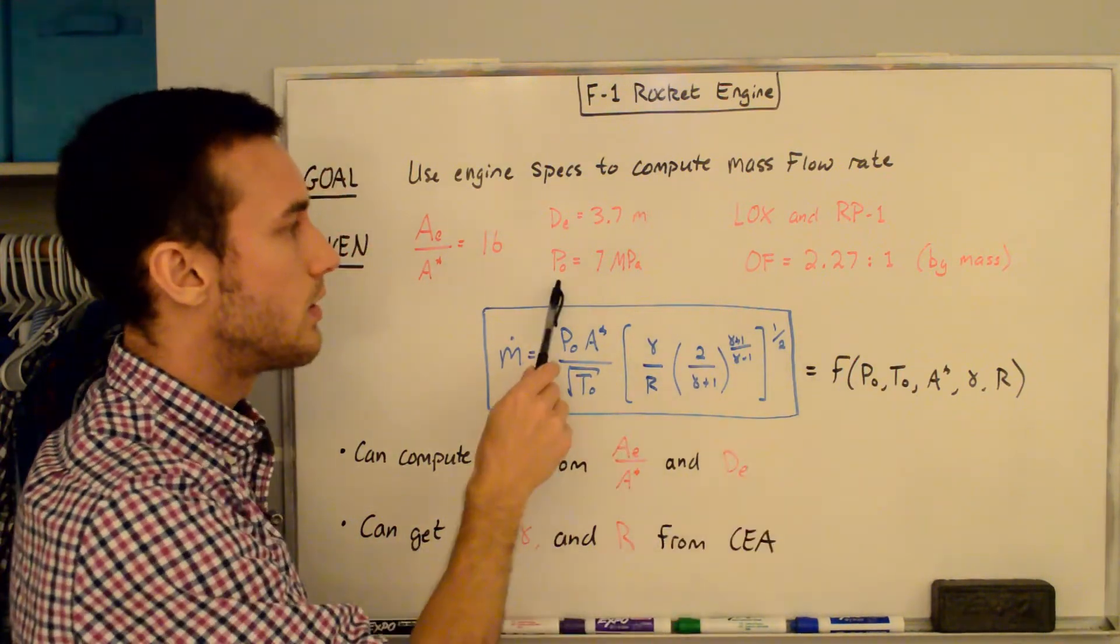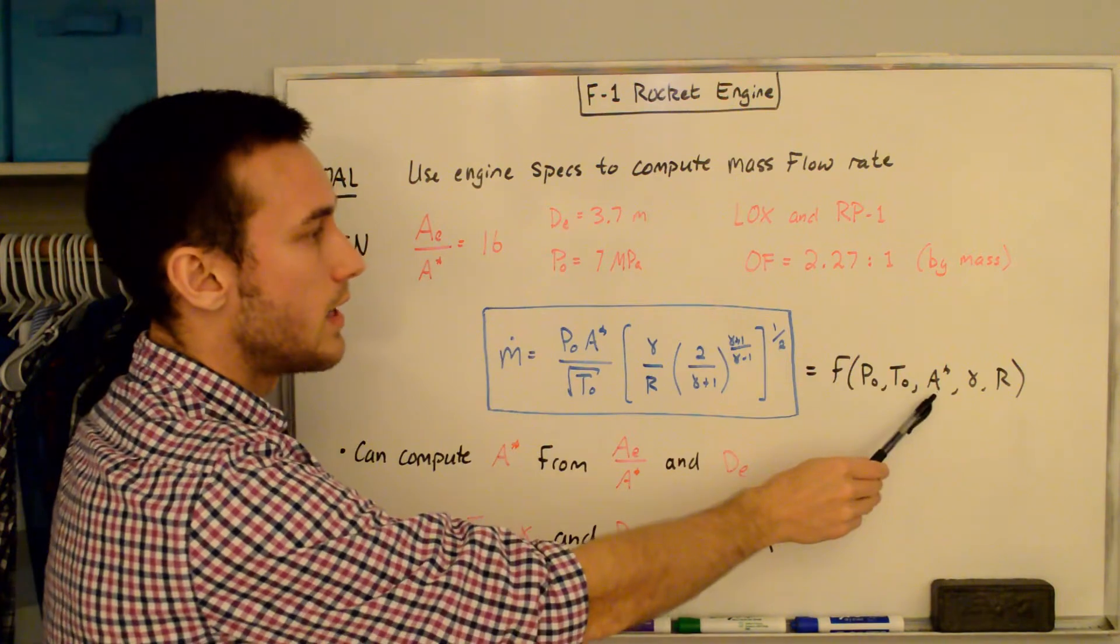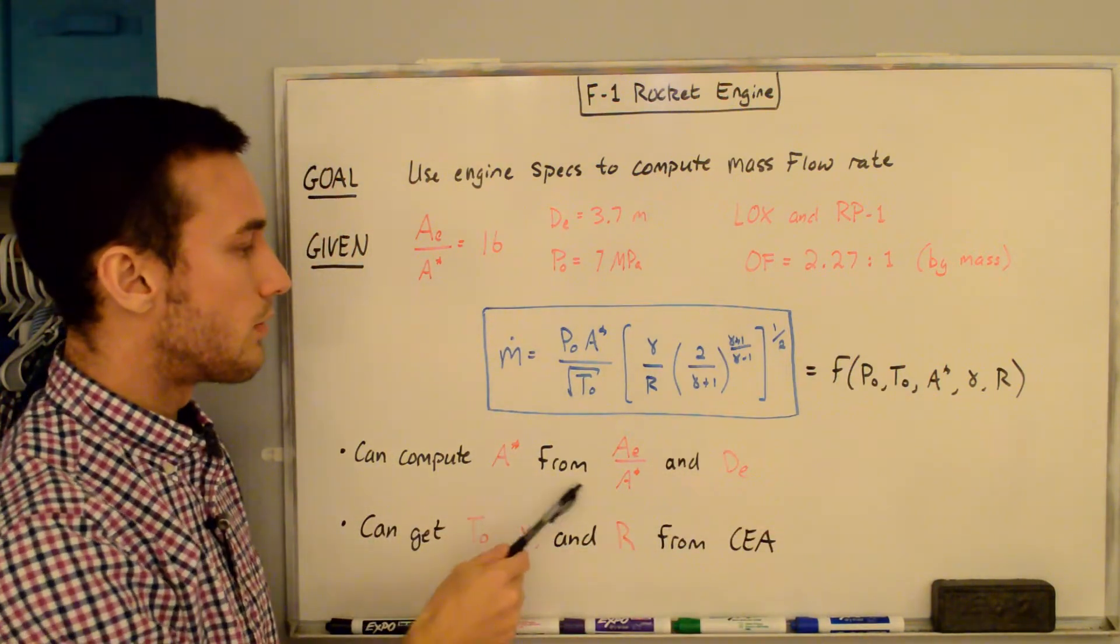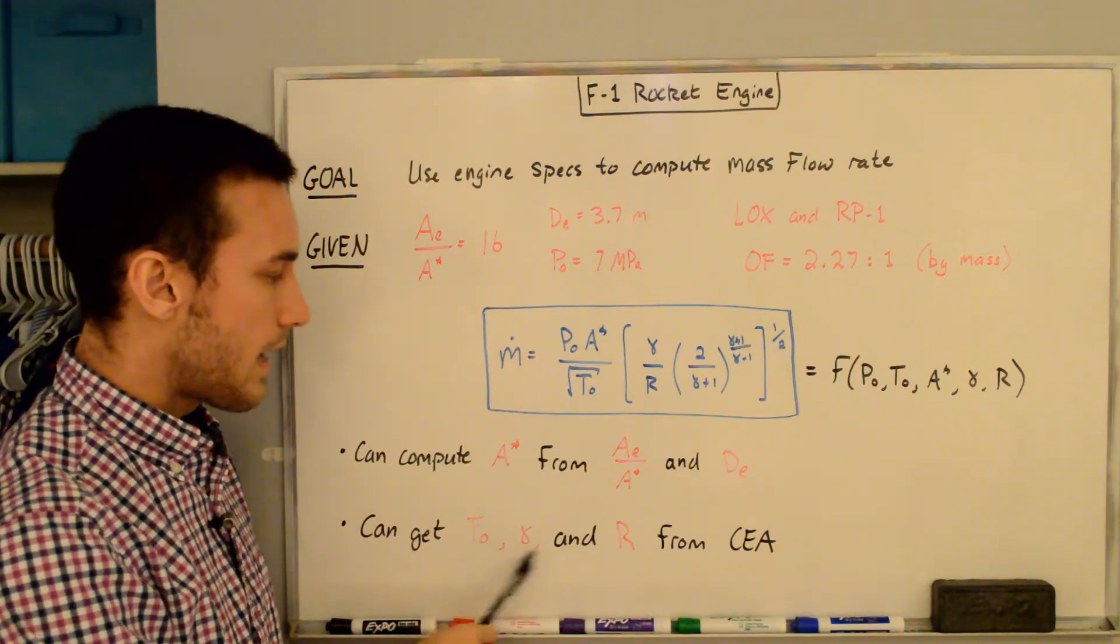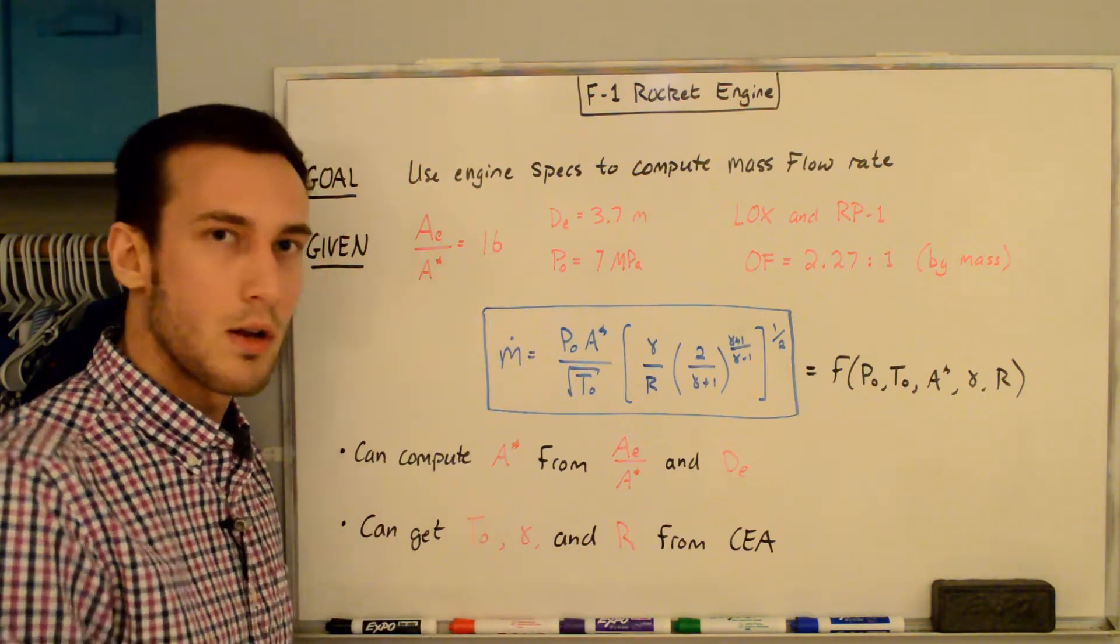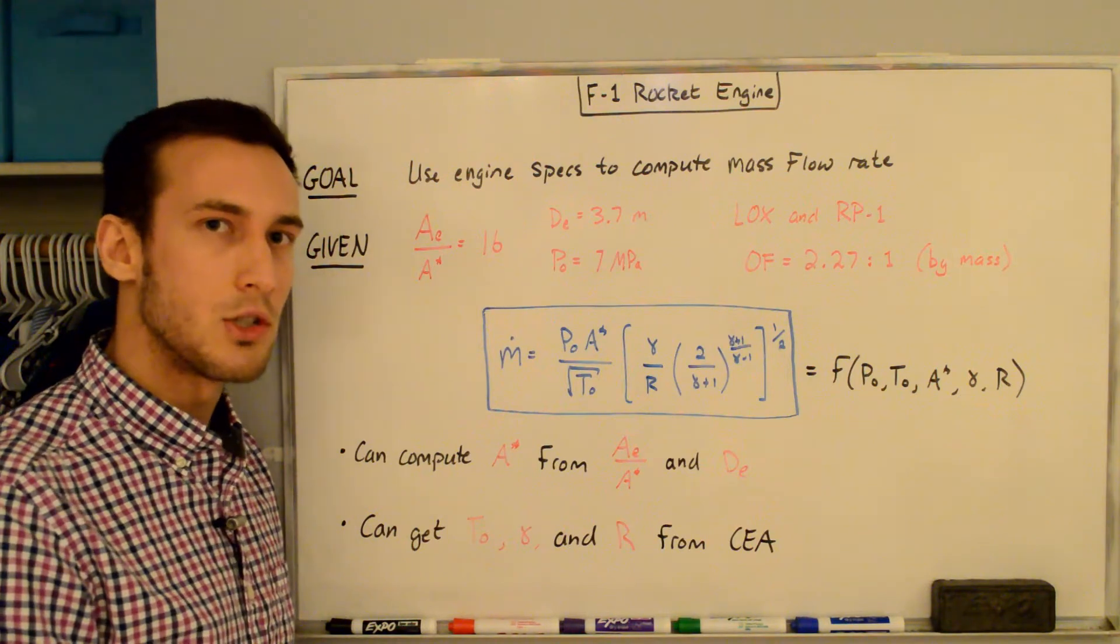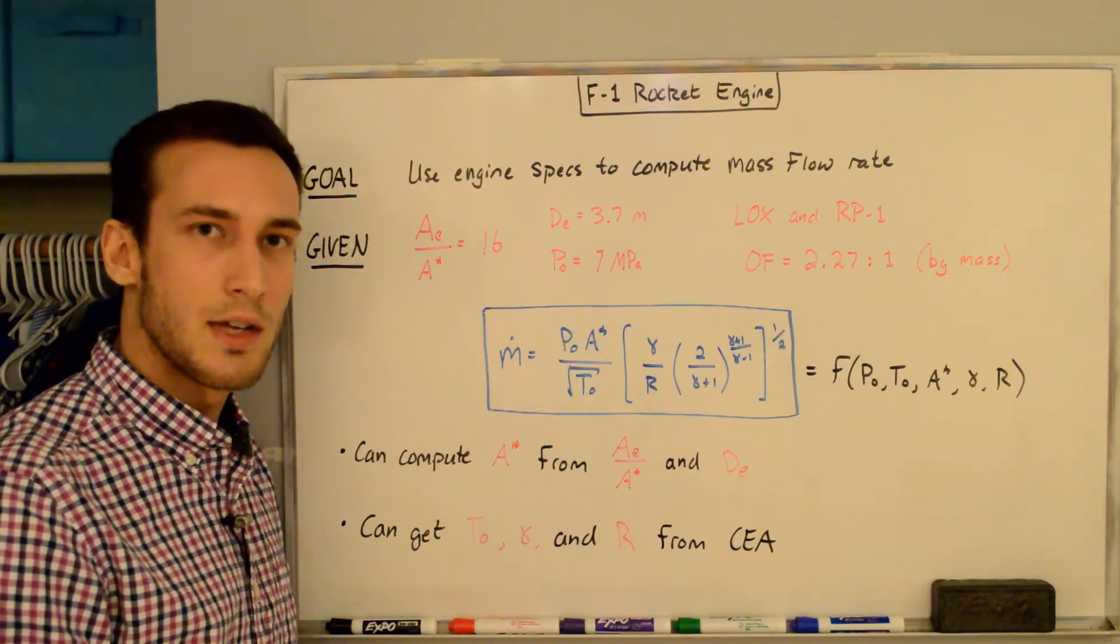The stagnation pressure we know from the givens. The area at the throat, or A star, can be computed from the area ratio and the exit diameter. Then we're left with T0, gamma, and R, which we can compute from something called the chemical equilibrium with applications code that was developed at NASA Glenn.